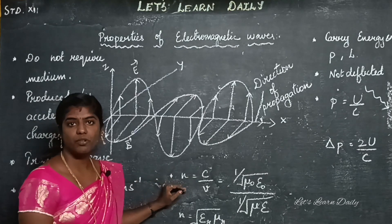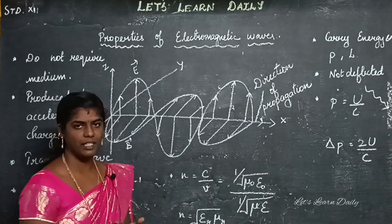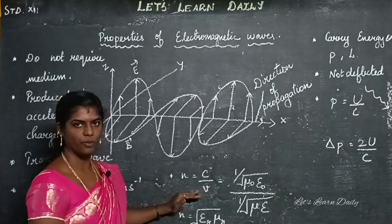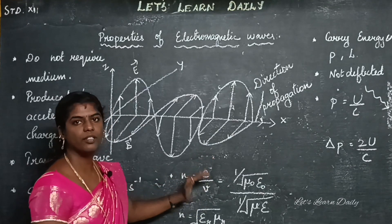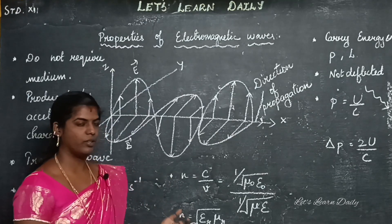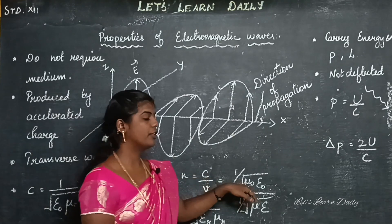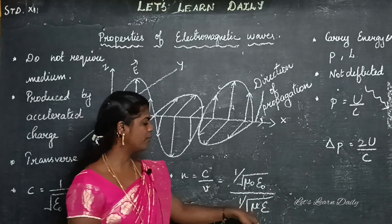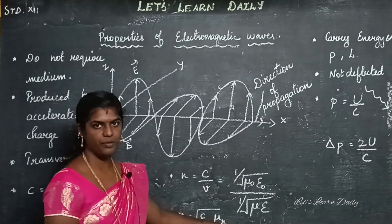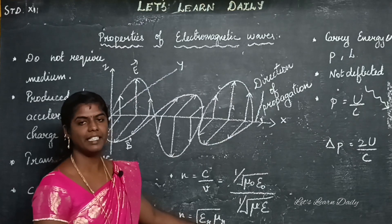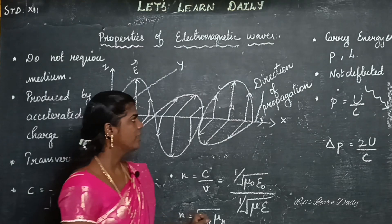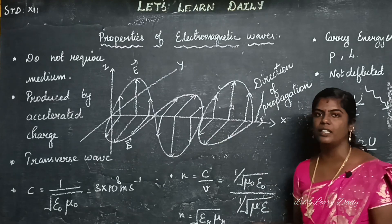When going through a medium, the speed becomes v = c/n, where n is the refractive index. The c value is 1 by root of mu-naught epsilon-naught, and in a medium, v equals 1 by root of mu-r epsilon-r. The refractive index n equals root of epsilon-r times mu-r.